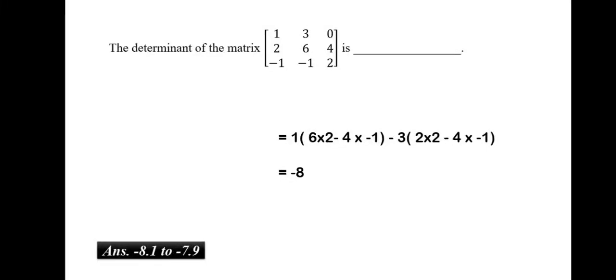The determinant of the matrix given here is. So, we know that we usually take the row which has the least number, so it is easy for us to calculate. So, I am going to take the first row. So, first, what we would do? With respect to 1, we would see that the cofactors which here are 6 which we multiply it by 2 and then minus 4 into minus 1. Minus because plus minus plus we use that form. So, minus 3 into the cofactors of 3 would be 2 into 2 minus 4 into minus 1. So, when we solve this, we get it as minus 8.